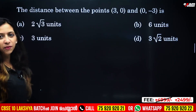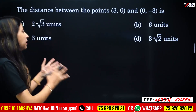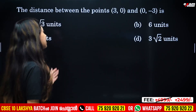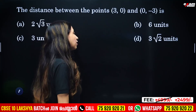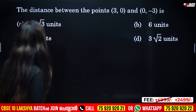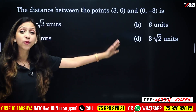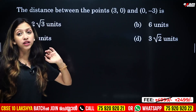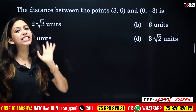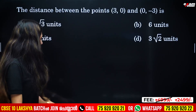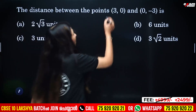First, we have a question in Coordinate Geometry. The distance between the points (3, 0) and (0, -3). We have to find the distance. We will use the distance formula.